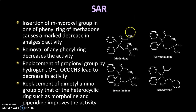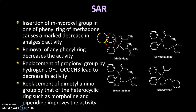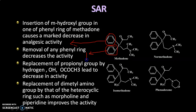Now talking about the SAR of methadone analogues. As seen with mepilidine, a hydroxyl group was present there, so people also tried adding a hydroxyl group on the phenyl ring here — but that resulted in an inactive compound or a decrease in activity. Next, people tried replacing this phenyl ring with different kinds of heterocyclic moieties, but that also resulted in a decrease in activity.